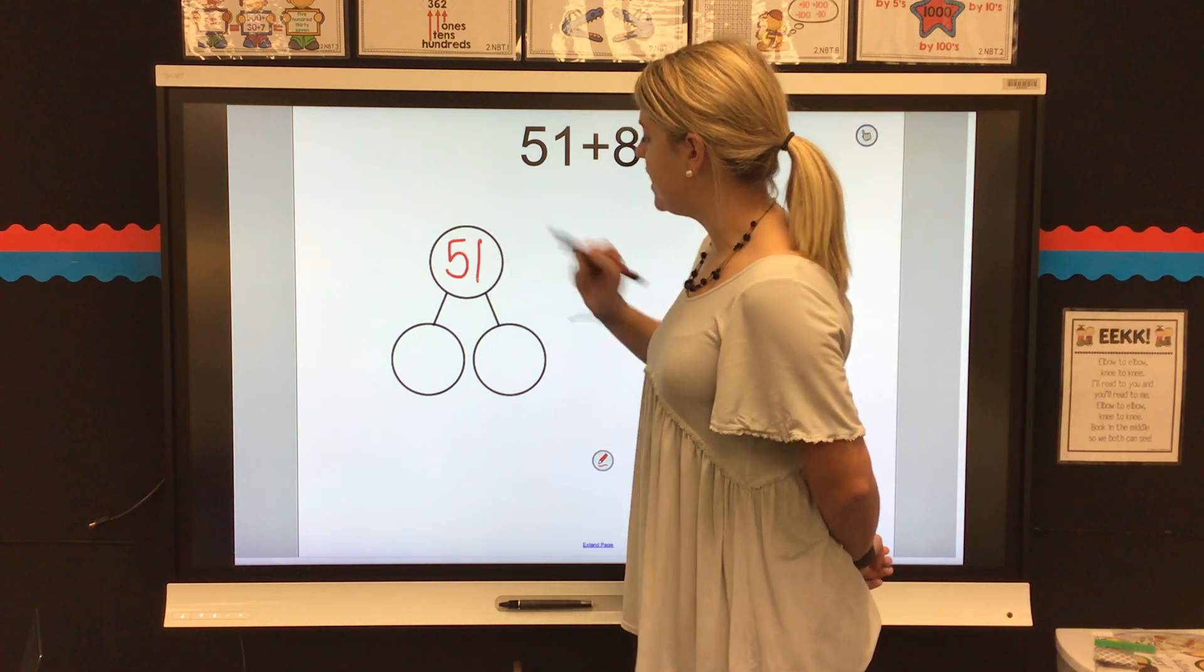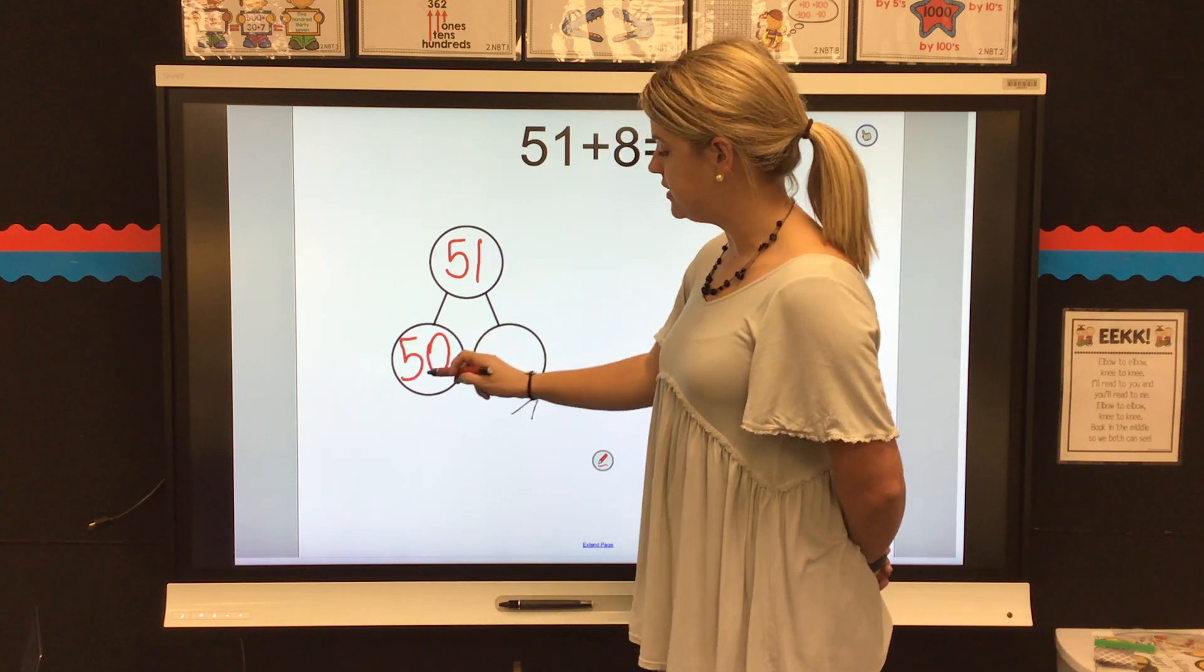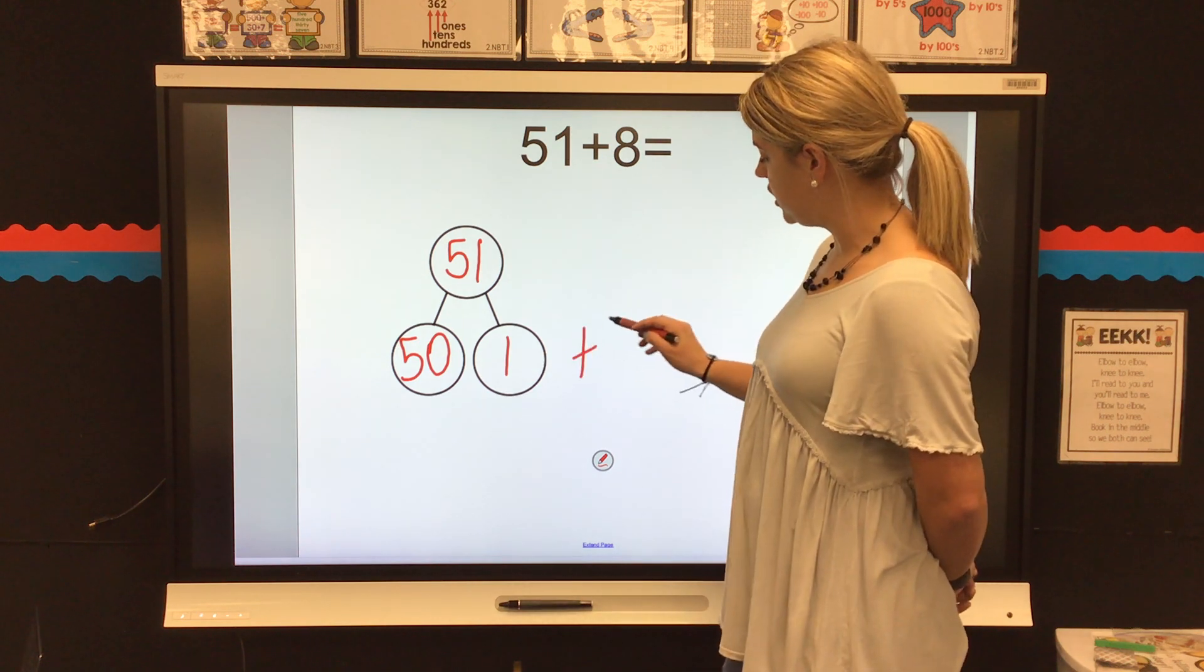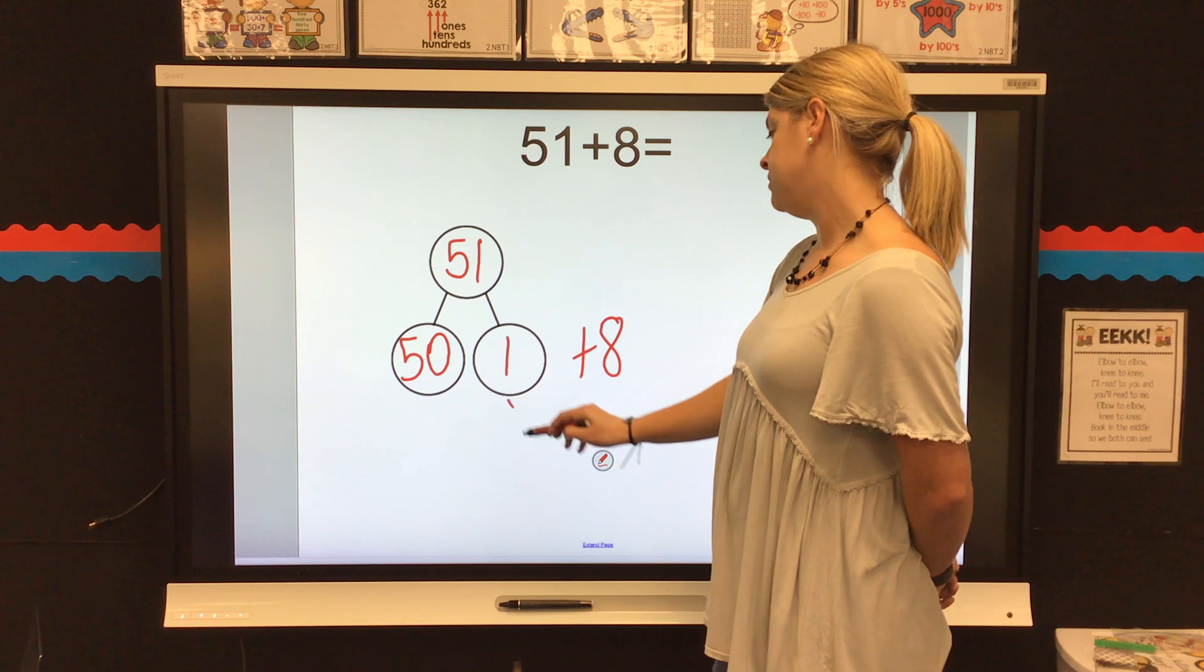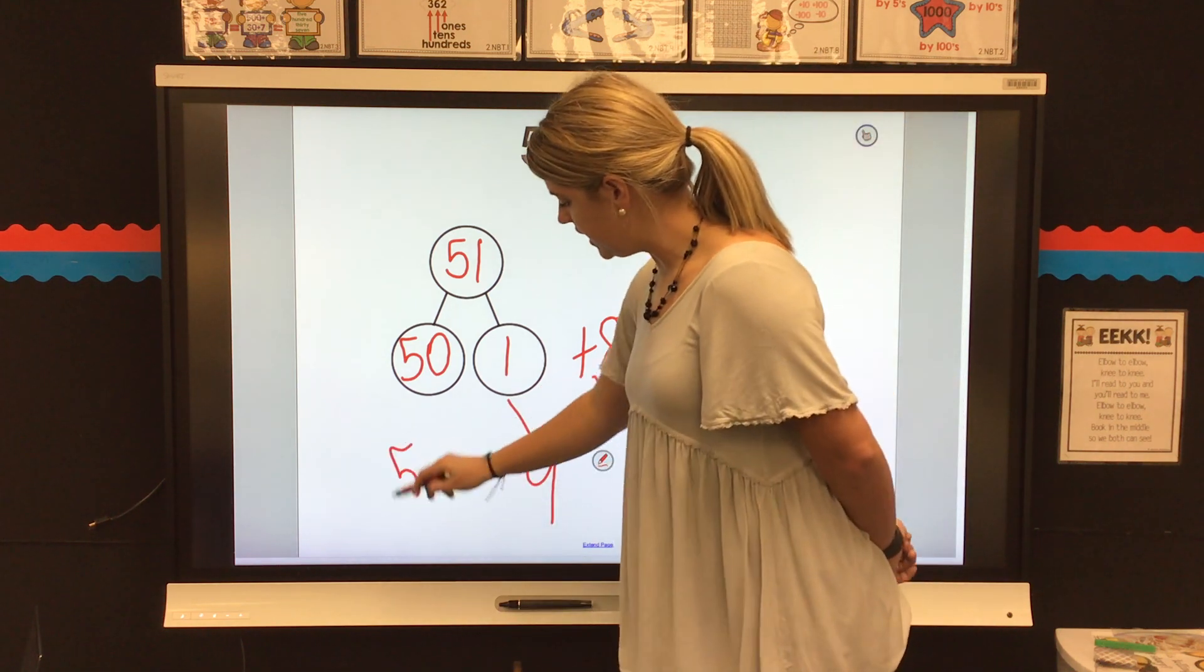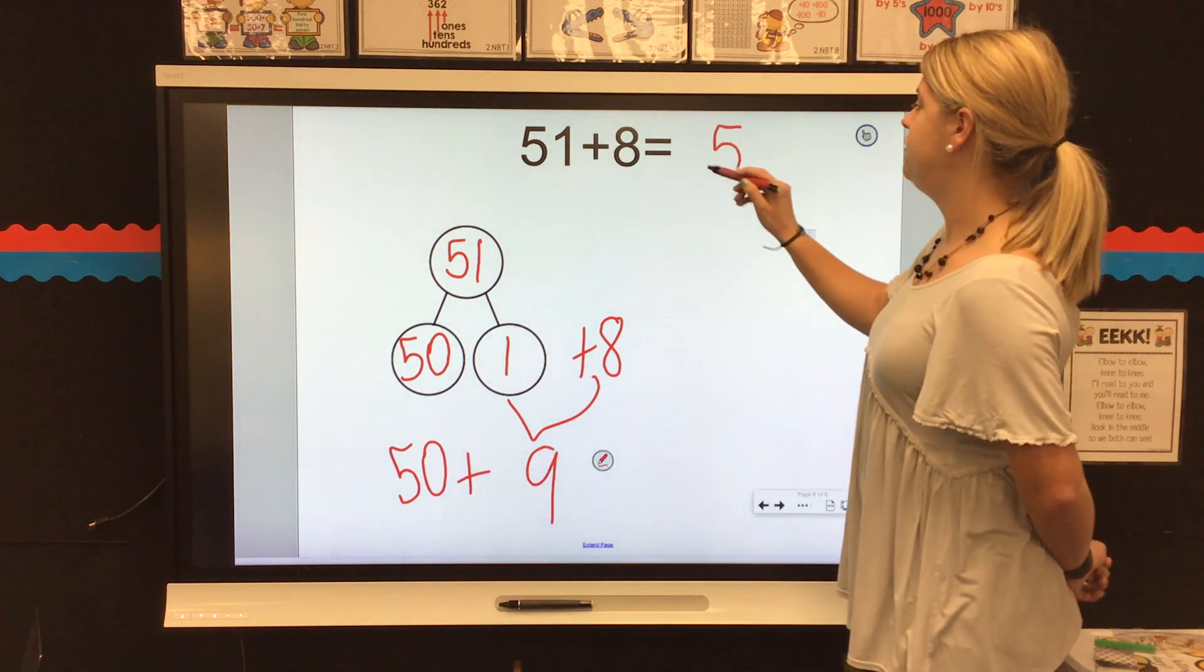51. I know that I'm going to put that number in my number bond, and I'm going to break it down into tens. Five tens, five tens equals 50, and 1. Then, I'm going to continue adding my ones from up here. 1 plus 8 equals 9. 50 plus 9 equals 59.